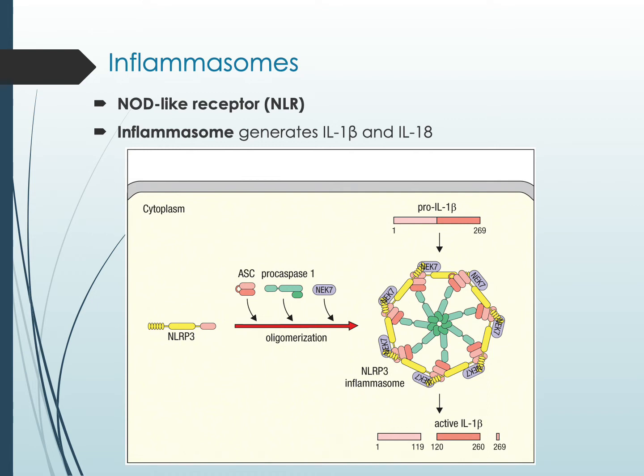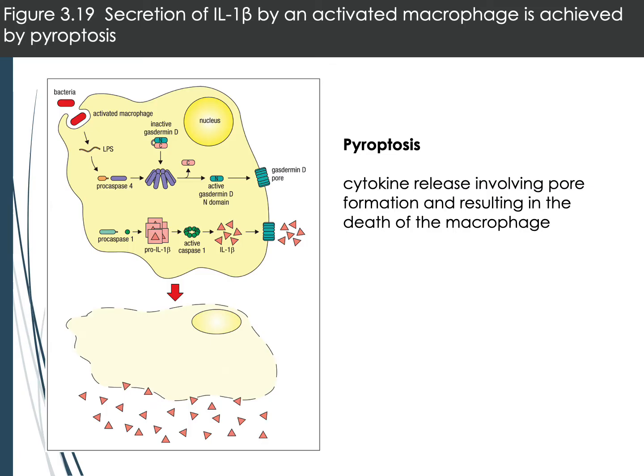Once IL-1β is activated, it still needs to exit the macrophage. This occurs through pyroptosis: the macrophage creates pores on its surface via gasdermin D, allowing some IL-1β to escape. As IL-1β increases, the macrophage undergoes a specialized form of cell death similar to apoptosis but unique to macrophages. Pyroptosis is thus the mechanism of cytokine release through the death of the macrophage — very effective.